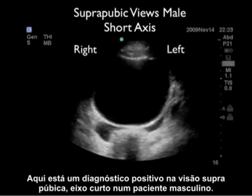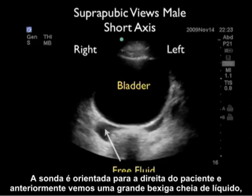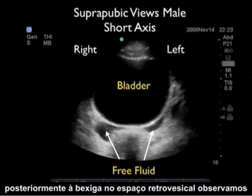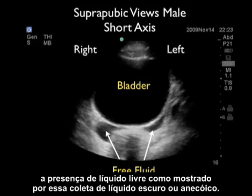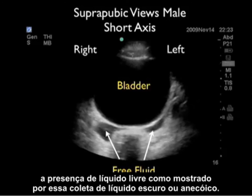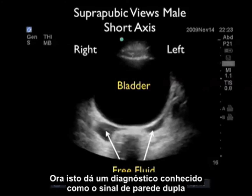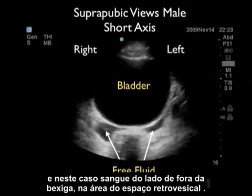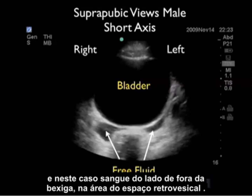Here's a positive examination, suprapubic view, short axis in a male. The probe is oriented towards the patient's right, and anteriorly we see a large fluid-filled bladder. Posterior to the bladder in the retrovesical space, we appreciate the presence of free fluid, shown by that dark or anechoic fluid collection. This gives a finding known as the double wall sign — we see the wall of the bladder outlined by the urine inside the bladder and the blood outside the bladder in the retrovesical space.